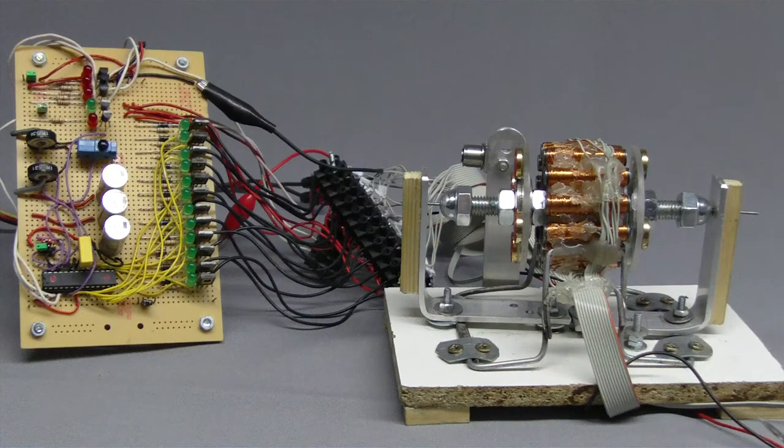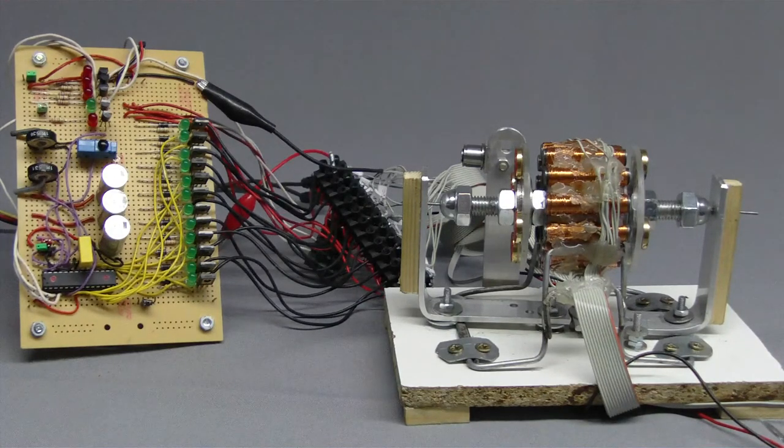Hello out there and welcome to this video about my little experimental electric motor. You see here a stepper motor with a stator consisting of 12 electromagnets. Each of the rotor disks features four permanent magnets.